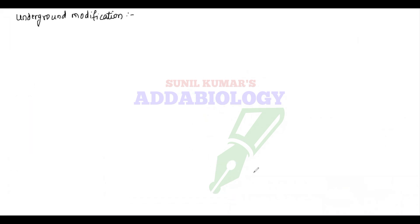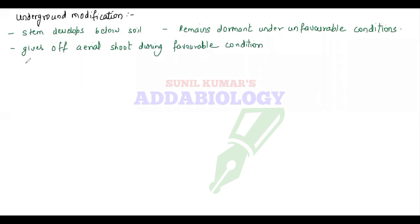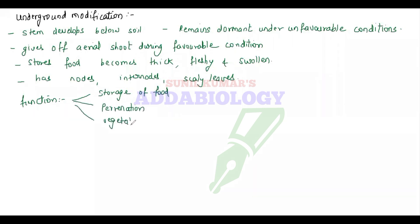Let us start with underground modification. The stem develops below the soil. It remains dormant under unfavorable conditions and gives off the aerial shoot during favorable conditions, surviving under the soil. The stems sometimes store food — they become thick, fleshy, and swollen — and they have nodes and internodes present. The functions are storage of food, perennation, and vegetative propagation.